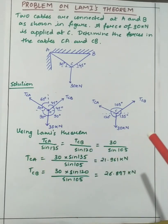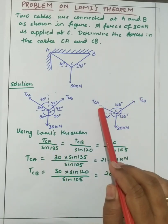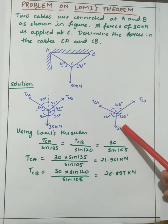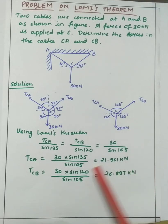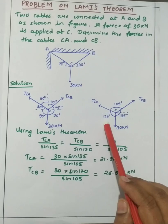Then using Lami's theorem - if you have not seen the video on Lami's theorem I have put the link in the description box. So TCA divided by sine 135 is equal to TCB divided by sine 120, always the angle opposite we have to take, then 30 divided by sine of 105.